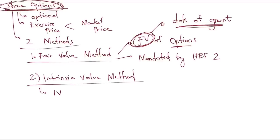How do we compute the intrinsic value? Intrinsic value is equal to the market value of shares minus the option price, also known as the exercise price. Note that fair value of options and fair value of shares are different things.